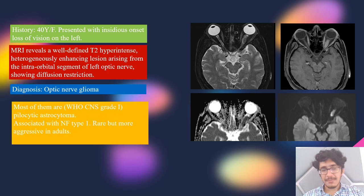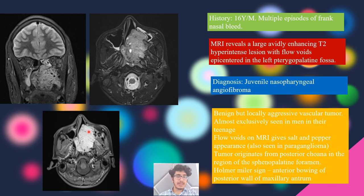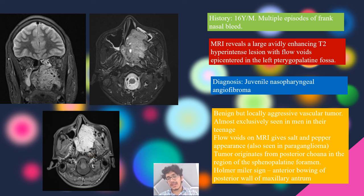A 16-year-old boy presented with multiple episodes of frank nasal bleeding. MRI showed a T2 hyperintense lesion with multiple flow voids giving a salt-and-pepper appearance; on post-contrast sequences there was avid enhancement. The lesion was centered in the left pterygopalatine fossa. This was juvenile nasopharyngeal angiofibroma, a benign but locally aggressive vascular tumor almost exclusively seen in adolescent boys.